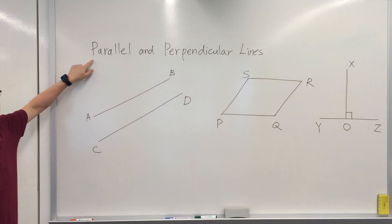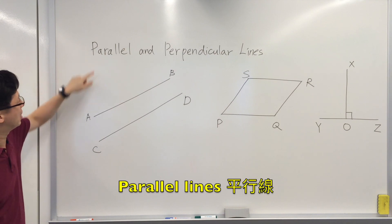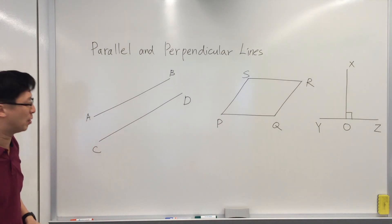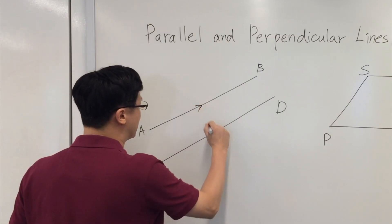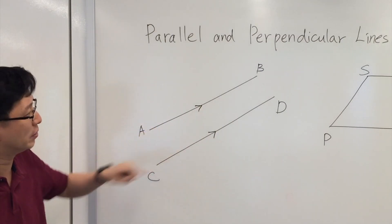Next we come to parallel and perpendicular lines. For parallel lines, that means the lines, even if we extend them, will not meet at a point, and we will use this arrowhead to represent they are parallel.